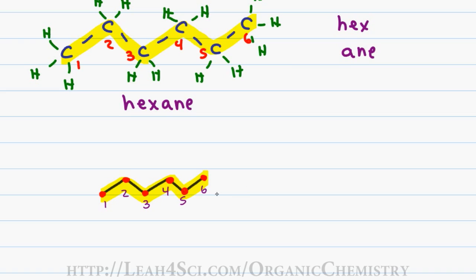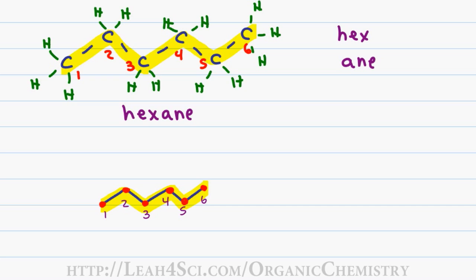Since carbon to carbon single bonds have the ability to rotate, you can see this molecule represented in a non-linear manner. Looking at the structure I drew here, I still have only six carbons and therefore only hexane. So no matter how the molecule is presented to you, don't let that fool you.